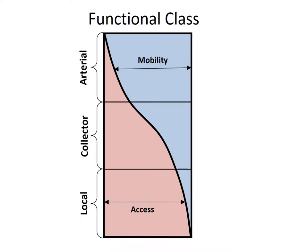Arterials provide the highest levels of mobility and low levels of access. Interstate highways are the highest order of arterials. The accessibility function provides many opportunities for entry and exit, which creates potentially higher friction from vehicle access.